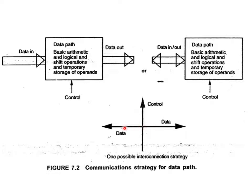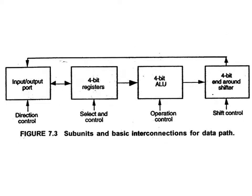This is one possible interconnection strategy. The diagram shows the subunits and basic interconnections for a data path. The data path is represented horizontally — there is a bidirectional data path and also unidirectional paths. The control signals are represented vertically: direction control, select control, operation control, and shift control. So the data path flows horizontally and the control path flows vertically.